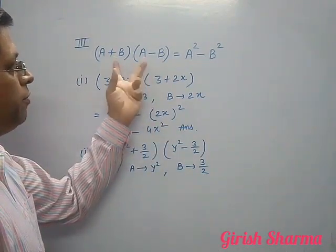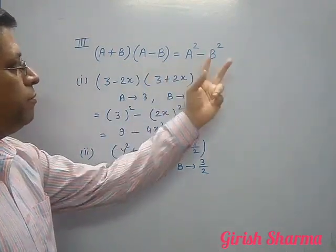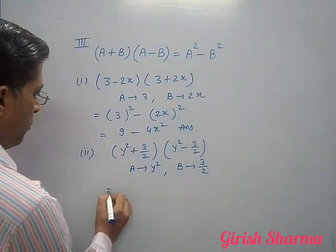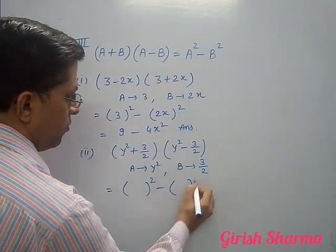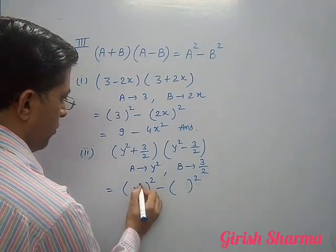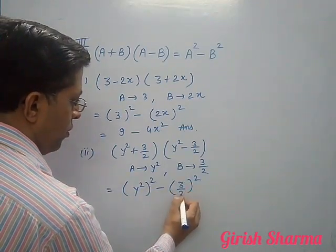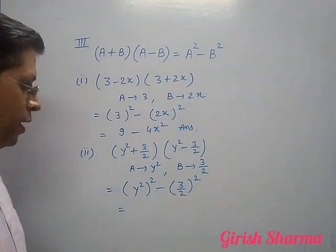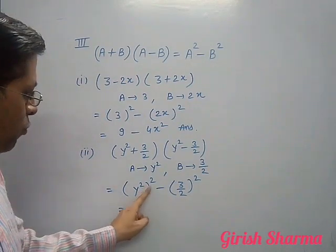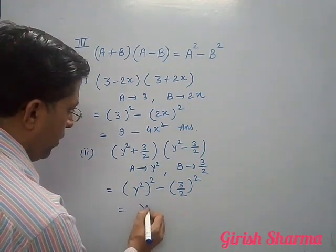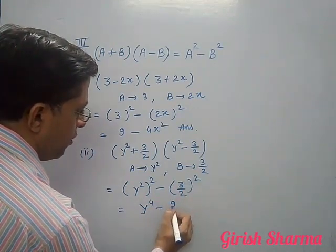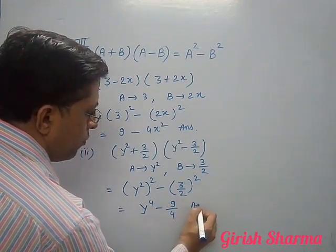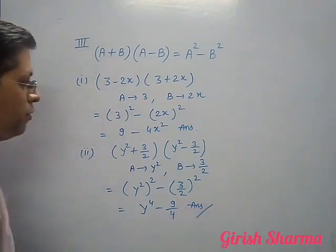Then A plus B into A minus B is what? A square minus B square. So this will be A square minus B square: y square, 3 by 2. Now, y to the 4, y power will be 4. 3 square is 9, 9 upon 4. This is your answer.